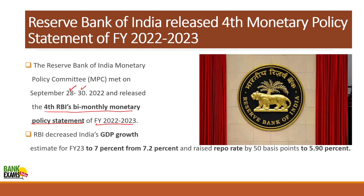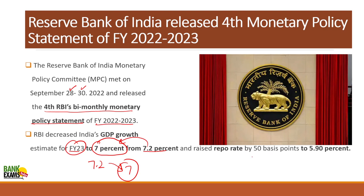The GDP estimate has been slashed from 7.2 percent to 7 percent for the financial year 2022-23. The forecasted GDP is now 7 percent, down from 7.2 percent. Additionally, the repo rate has been increased by 50 basis points and now stands at 5.9 percent.